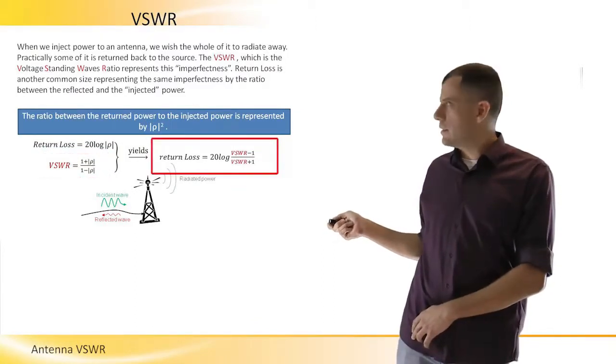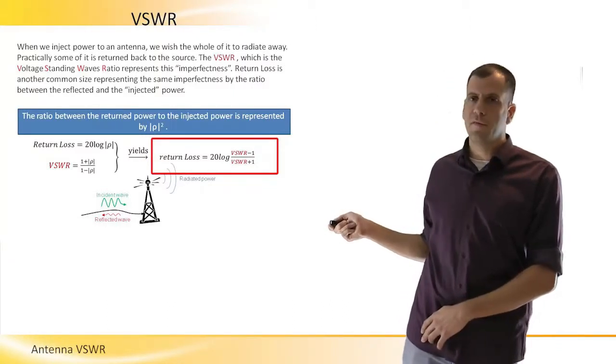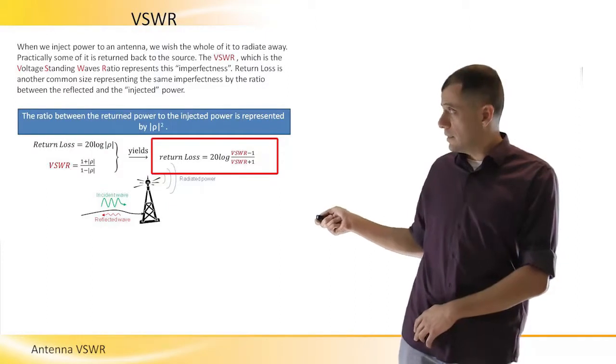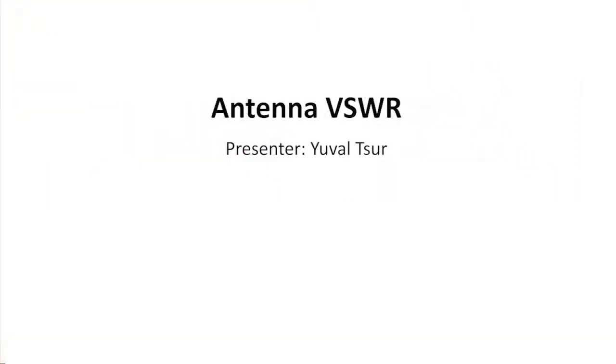The return loss is 20 log VSWR minus 1 divided by VSWR plus 1, as indicated here in this formula.